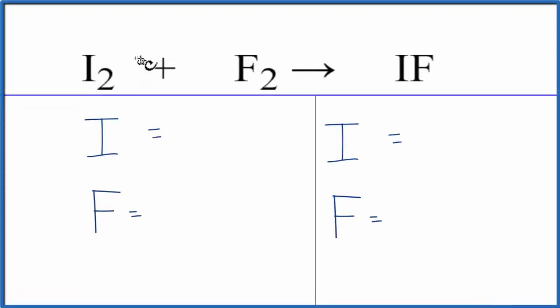To balance this equation, I2 plus F2 yields IF. Let's add the atoms up on both sides of the equation.